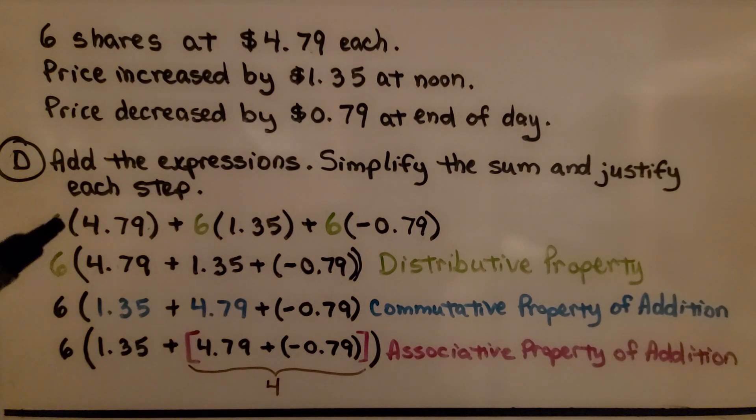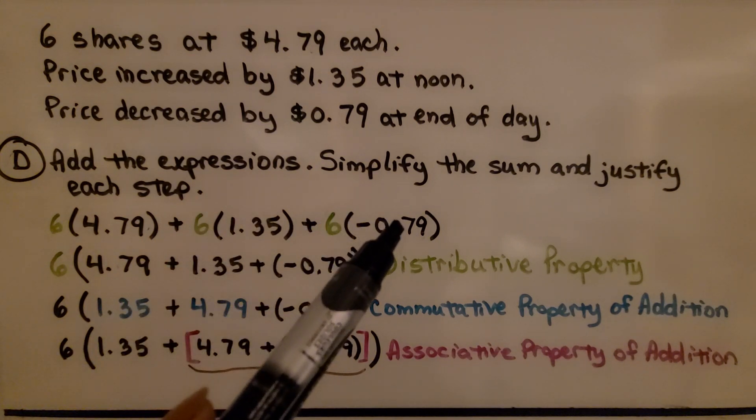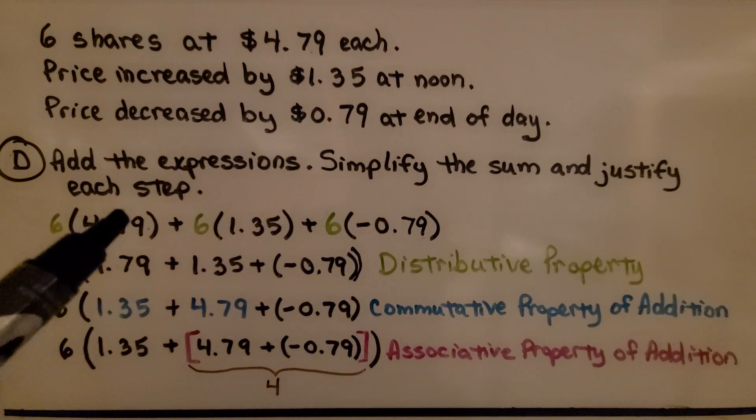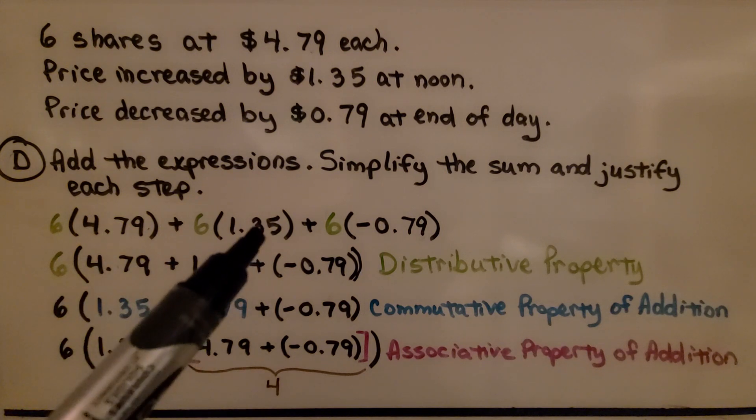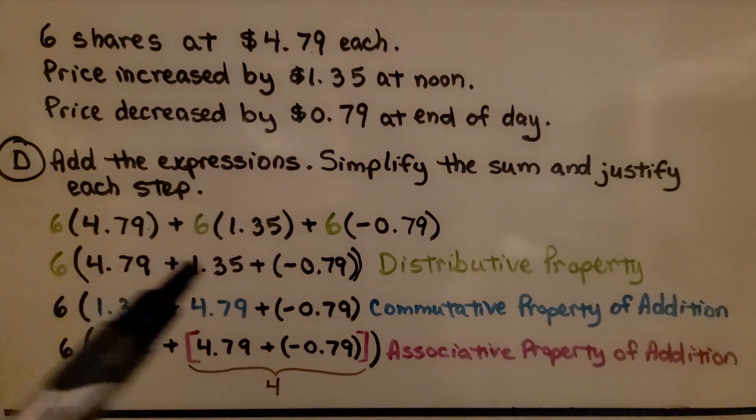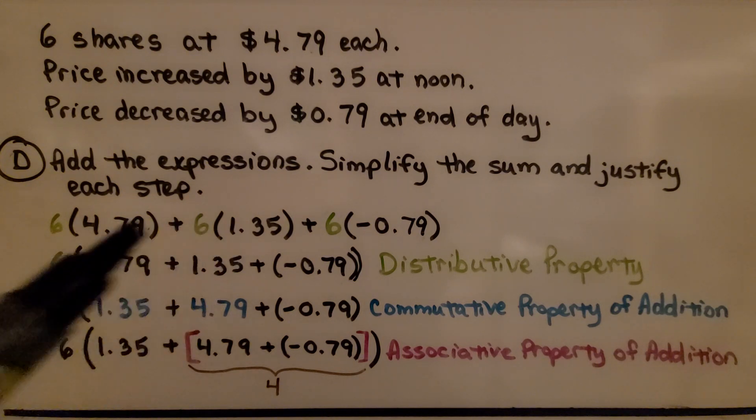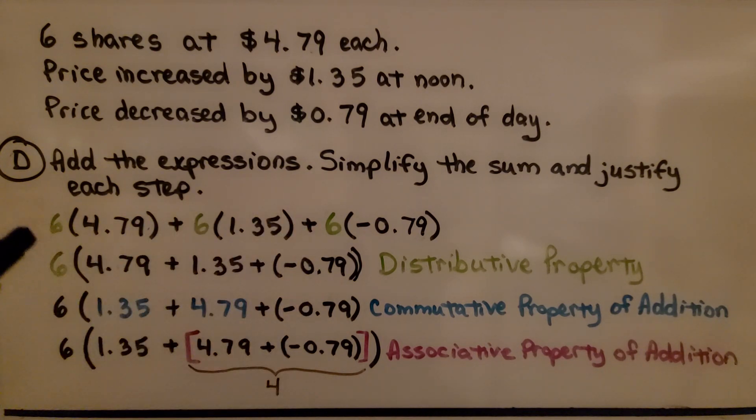Well, since this is multiplied by 6, and this is multiplied by 6, and this is multiplied by 6, we can just put the $4.79, the $1.35, and the negative $0.79 into one big parenthesis and put one 6 on the outside so that we could multiply by distributing that 6. They're all being multiplied by 6 anyway. That's the distributive property.